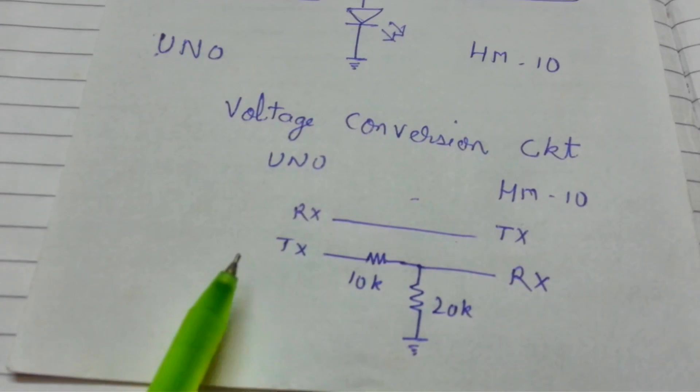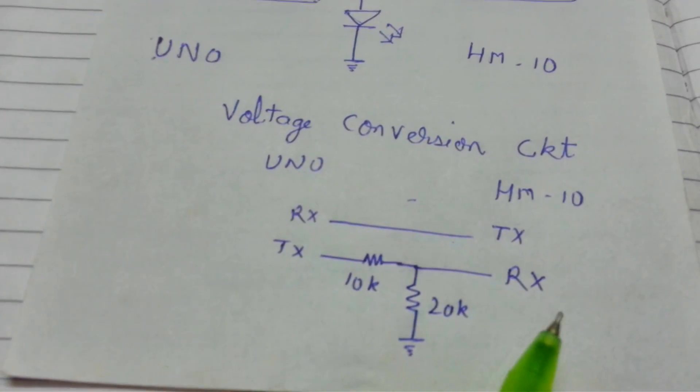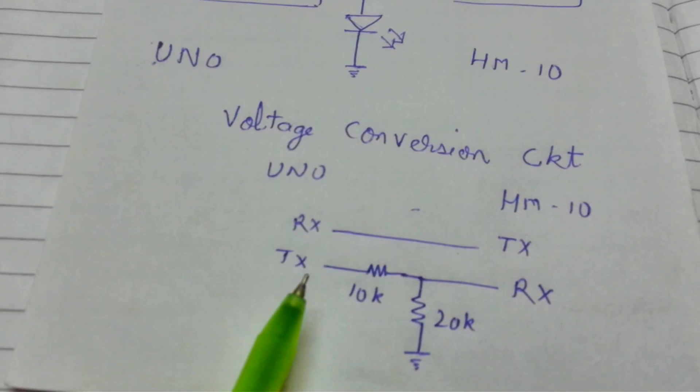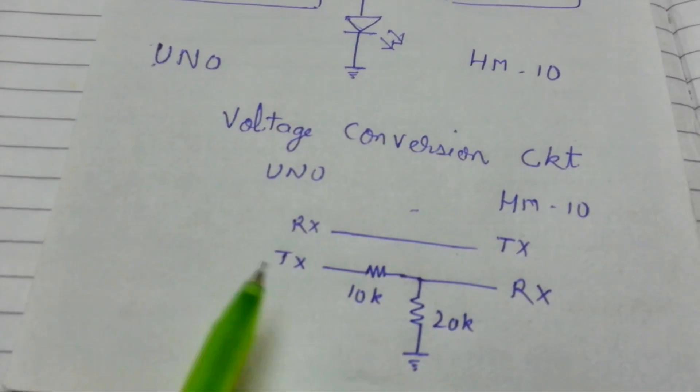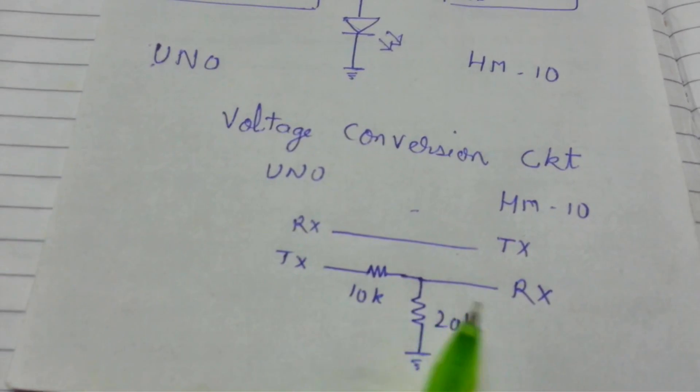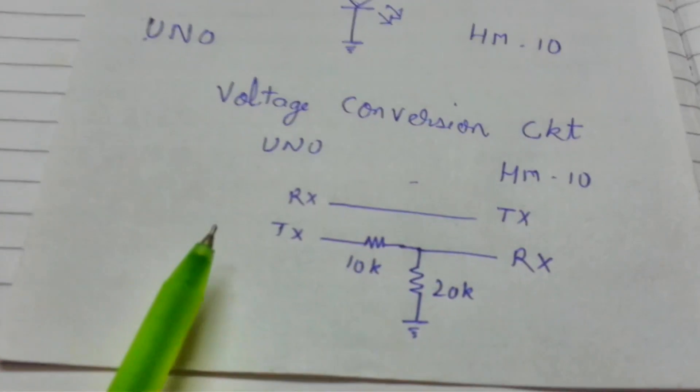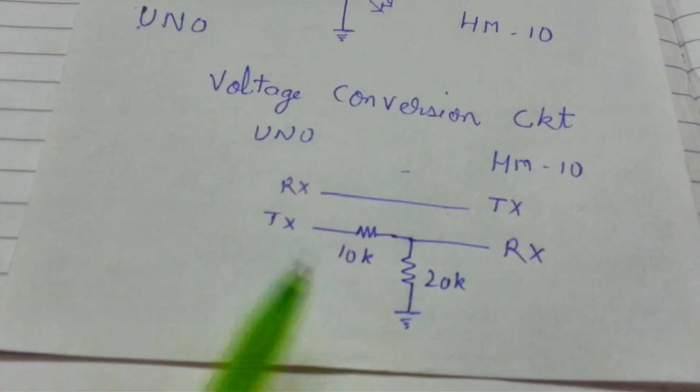But when you are sending from the UNO to the HM-10 module, you need to figure out a voltage divider circuitry in such a way that your 5 volt is converted to 3.3 volt. There are other ways to do it but this is the easiest way to do it.